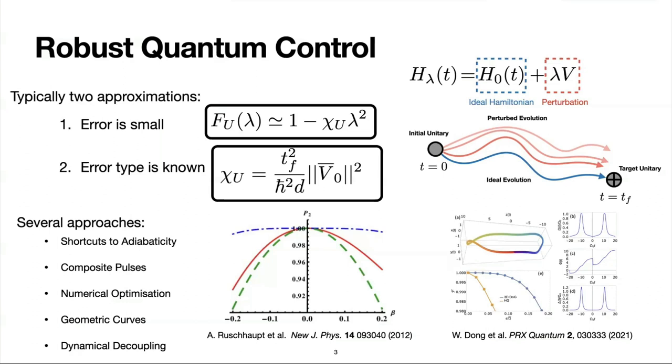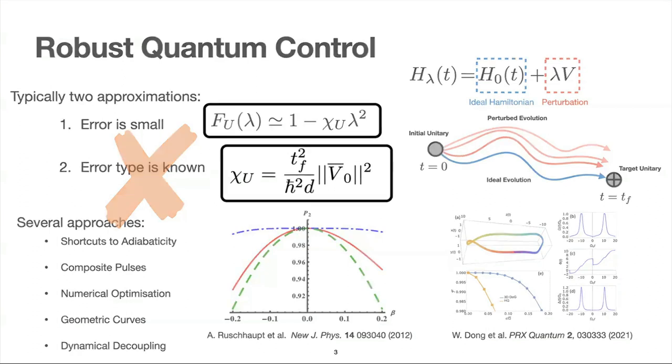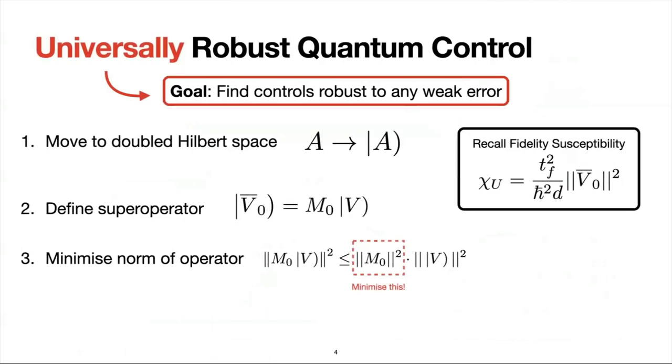So that's what people have looked at in the past. What do I want to look at? So basically I want to kill this second approximation. So I want to say I have some weak error, but I don't know what it is. So I don't know what V is. So that's the thing you want to look at.